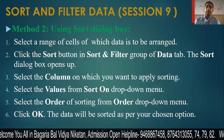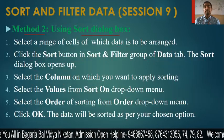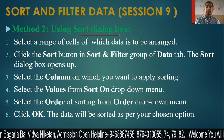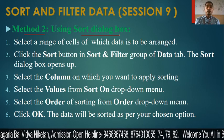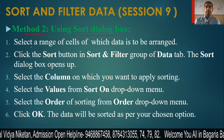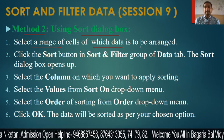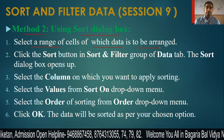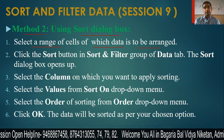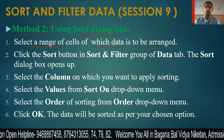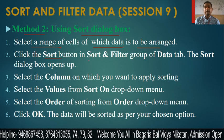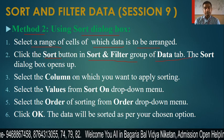Next, let's look at Method 2: using the Sort dialog box. What can you do with the Sort dialog box? You can sort the data. Select the range of cells whose data is to be arranged, then click the Sort button found in the Sort and Filter group on the Data tab.